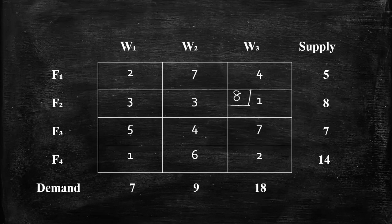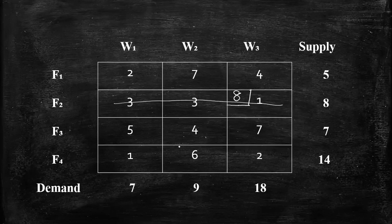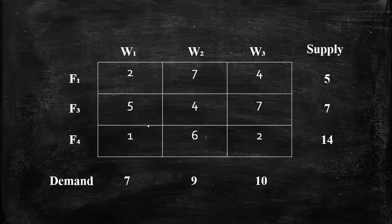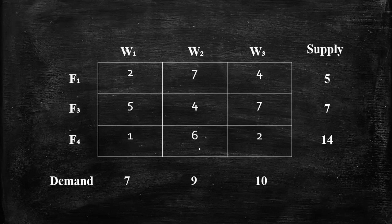For example, we allocate to cell F2, W3, and E1. The cell values are 8 and 7, so the minimum value is 8. We allocate 8 to that cell and cross it out with a double-cross for F2. The remaining value becomes 10. From the reduced matrix, there is no lowest value of 1 remaining in that row, so we check the next lowest value, which is 1 elsewhere, and proceed with the next allocation.